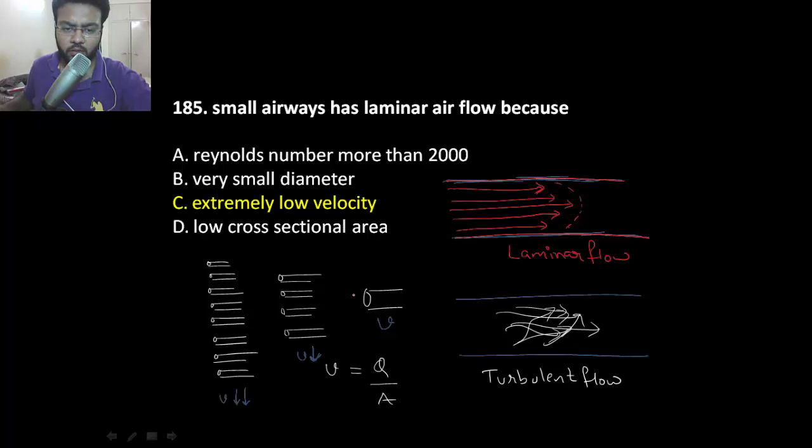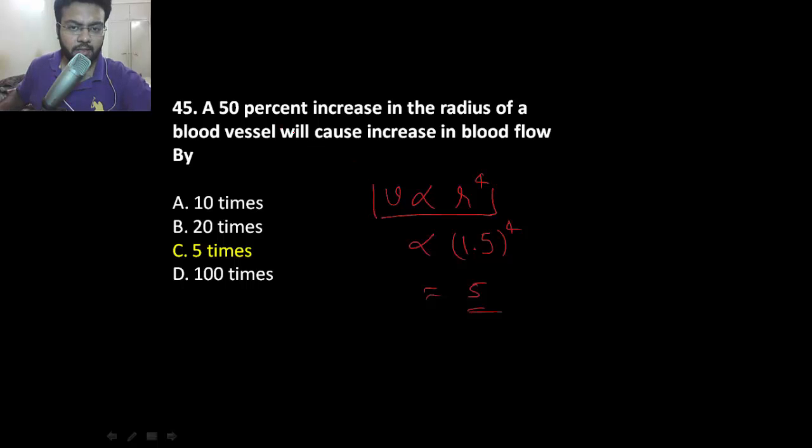Small airway has laminar airflow because velocity is inversely proportional to cross-sectional area. If this is the airway dividing into the ultimate small airways, you'll find that the cross-sectional area increases. If you take the cross-sectional area of this one and sum up the cross-sectional area of all the smaller branches, you'll find that this has the maximum cross-sectional area. Hence, the velocity will be minimum, and this is the reason why small airway has laminar flow, not turbulent.